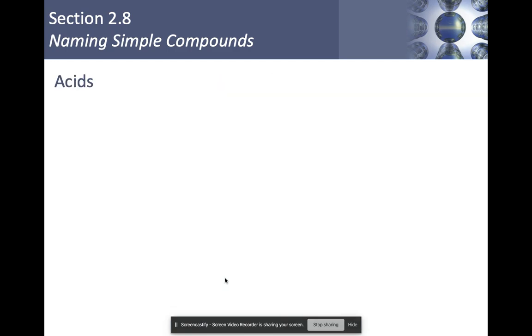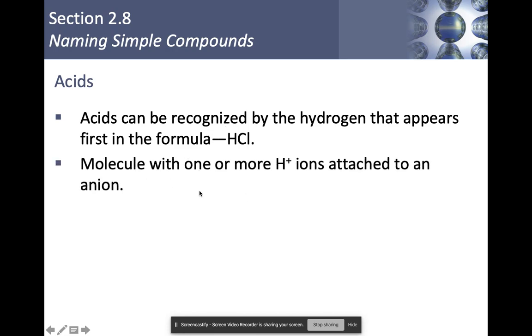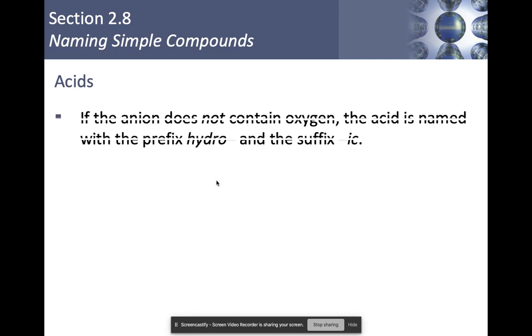Now let's talk about our last class here, which are going to be acids. Acids can be recognized by the hydrogen that appears first in the formula. If you have something with an H at the beginning, that's going to let you know that you have an acid. If the anion does not contain oxygen, the acid is named with the prefix hydro, and then we add the suffix '-ic'. That's why it's hydrochloric acid. So for example, we have HCl. It's hydrochloric acid. We care about the chlor part because that comes from chlorine.